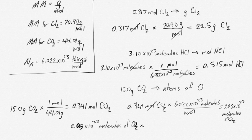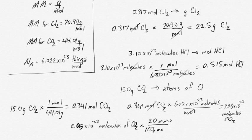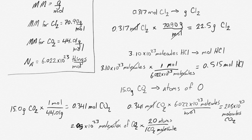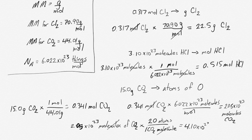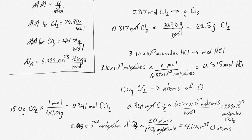You can go from number of molecules to number of atoms using a ratio as well. We have two oxygen atoms for every one CO2 molecule. The molecules cancel and we're left with a number of atoms: 4.10 times 10 to the 23 oxygen atoms.